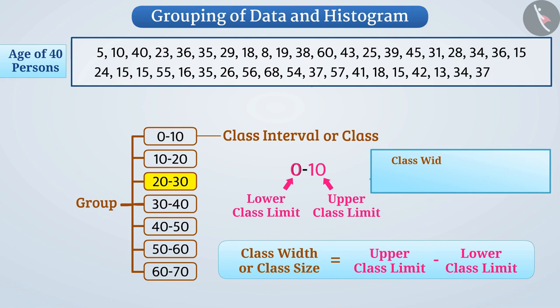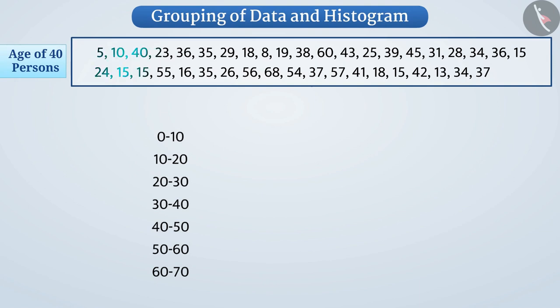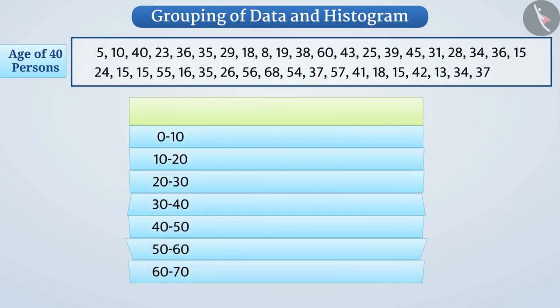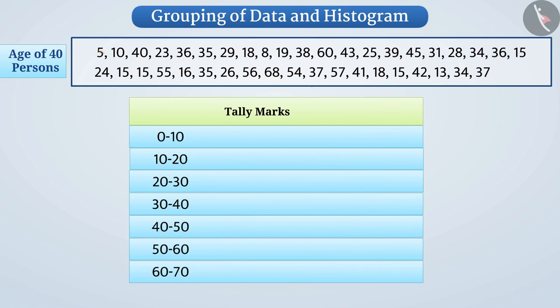Similarly, the class width of the class interval 20 to 30 will be 30 minus 20 equals 10. Similarly here, the class width is 10. Now, we will represent the numbers in the table in the form of tally marks. Here, the observation 5 is included in the class interval 0 to 10. So we will represent it in the table by making a tally mark in the row 0 to 10.